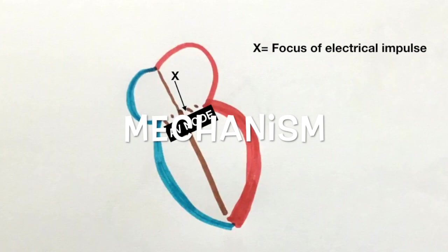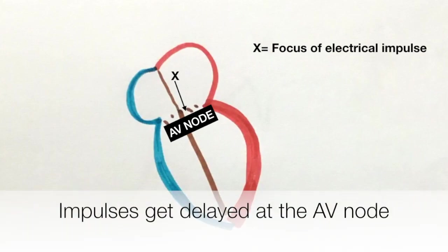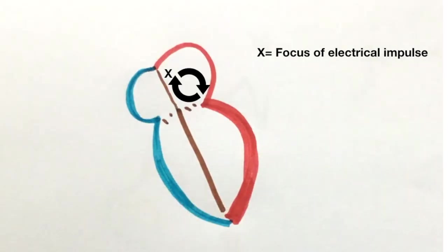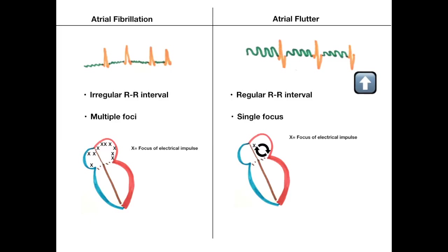The issue is that this one source produces impulses at an extremely high rate. The AV node is the place where electrical impulses get delayed. Till the time the AV node allows impulses to enter the ventricles, these impulses move in a circular motion in the atrium. This gives rise to a pattern which looks something like this on an ECG. Here, the time between two consecutive QRS complexes are equal.